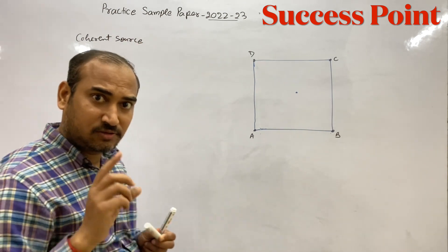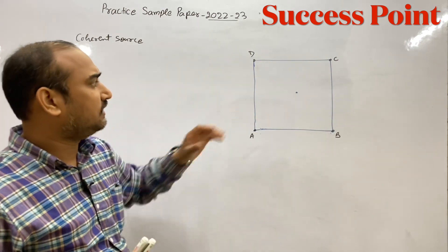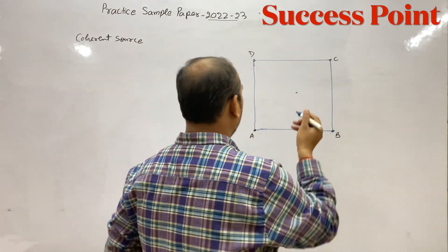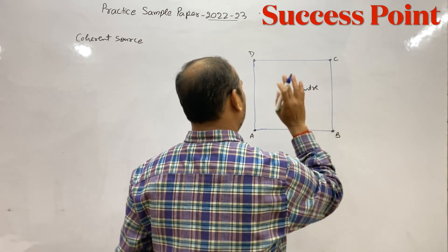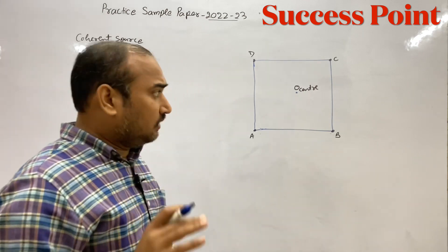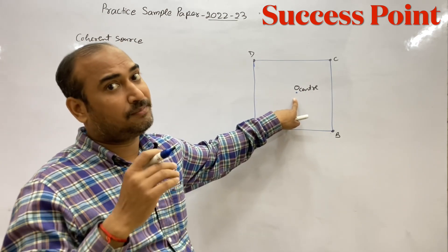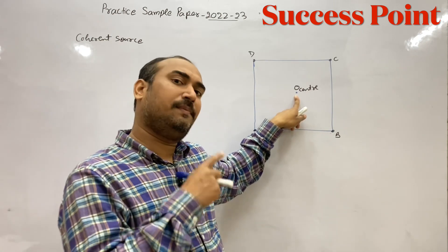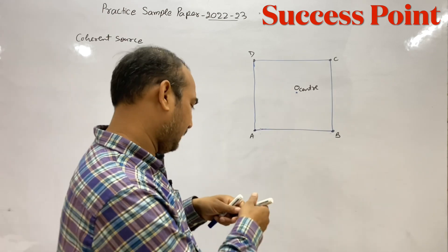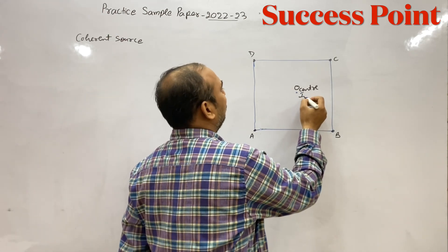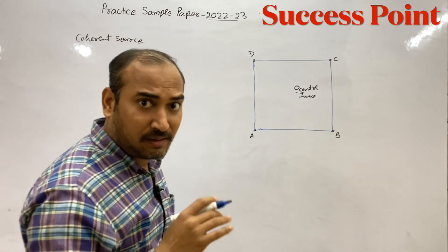जब दो coherent sources कहीं भी रखते हैं — चाहे diagonal में, चाहे corner पर — center पर हमको हमेशा constructive interference मिलें, हमेशा bright fringe मिलें. Center पर हमेशा constructive interference, यानी intensity maximum होनी चाहिए. (When two coherent sources are placed anywhere — diagonal or corner — at the center we always get constructive interference and a bright fringe, meaning maximum intensity.)